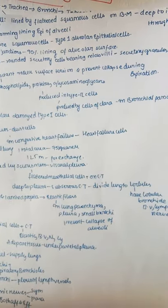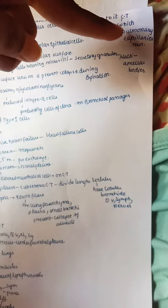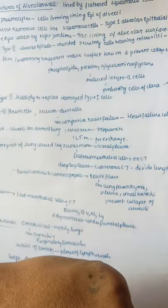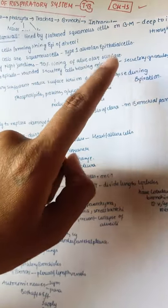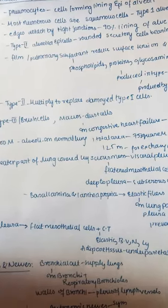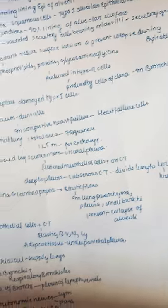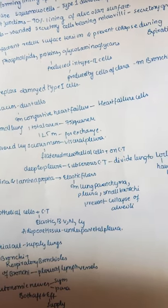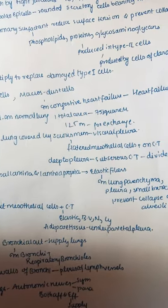The alveolar wall is mainly lined by flattened squamous cells on the basement membrane, with connective tissue through which pulmonary capillaries run. The most numerous cells are Type 1 alveolar epithelial cells, which are squamous and cover 90% of alveolar surfaces, with edges attached by tight junctions. Type 2 alveolar epithelial cells are rounded secretory cells bearing microvilli with secretory granules and multilamellar bodies. They produce pulmonary surfactants — containing phospholipids, proteins, and glycosaminoglycans — which reduce surface tension and prevent collapse during expiration. Type 2 cells also multiply to replace damaged Type 1 cells.